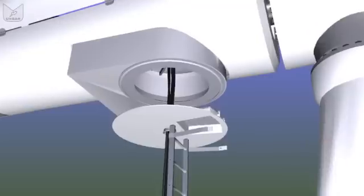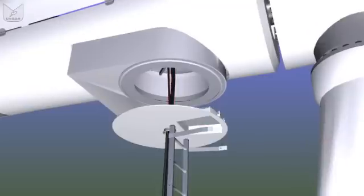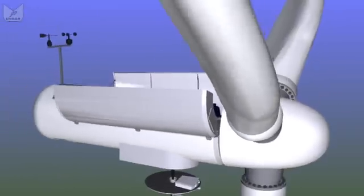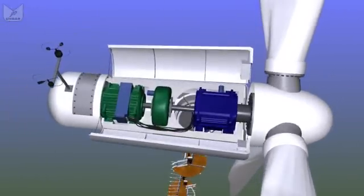Just above that, we have the yaw ring, with the bearings that allow the nacelle and the rotors to rotate around to face the wind. And this sealed platform acts as a bit of fire protection, also avoids people falling back down the tower, because at the top of the nacelle, we simply have a hole through which we climb.